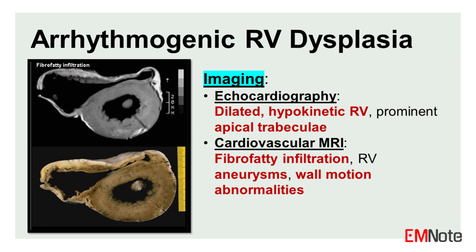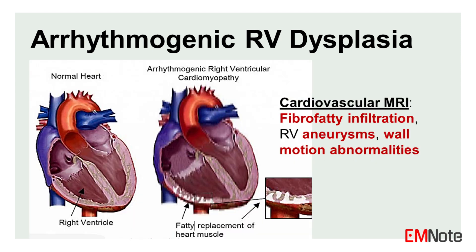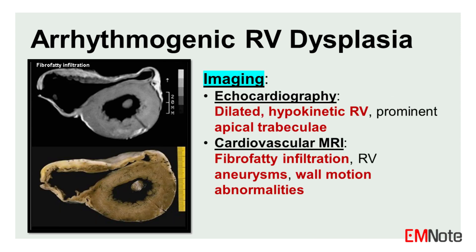Echocardiography and cardiovascular MRI are valuable imaging modalities for assessing structural and functional abnormalities of the RV.